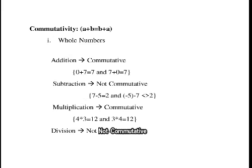The next property we will discuss is the commutativity property. Commutativity means a plus b equals b plus a. For whole numbers, addition is commutative. For example, 0 plus 7 equals 7 and 7 plus 0 equals 7. In subtraction, it is not commutative. For example, 7 minus 5 equals 2, but 5 minus 7 is not equal to 2. So subtraction is not commutative.